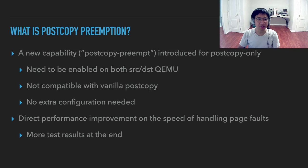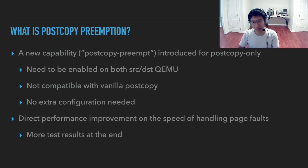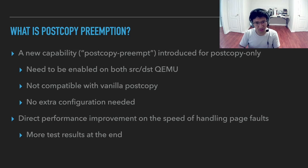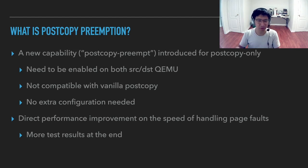What is post-copy preemption? It is a new capability introduced only for post-copy, not for pre-copy, because it solves issues in post-copy only. It needs to be enabled on both source and destination of QEMU, which is quite common. It is not compatible with vanilla post-copy — we cannot migrate from an old QEMU with no post-copy preemption to a new QEMU which has it. We need either both binaries to be latest to support preemption mode, or use the legacy way to migrate with post-copy.